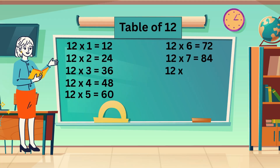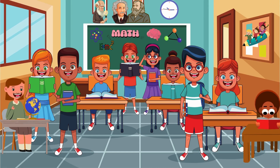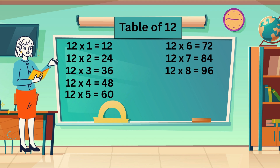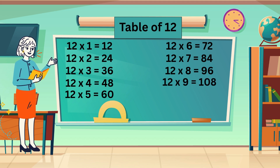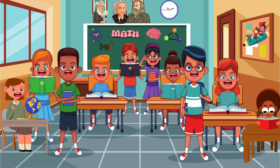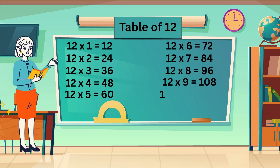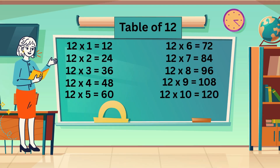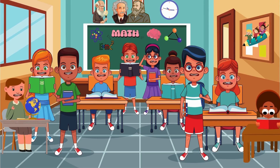12 eights are 96. 12 nines are 108. 12 tens are 120.